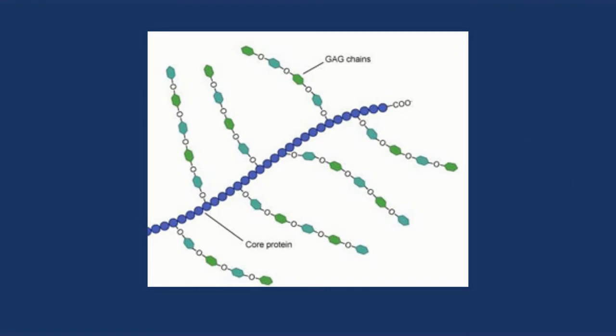This is what a typical proteoglycan would look like. We have a core protein and hanging off that we have numerous GAG chains, making a complex mucopolysaccharide molecule.